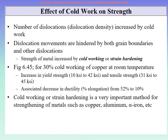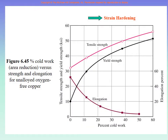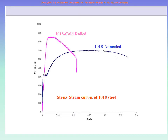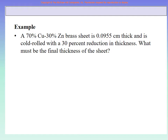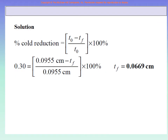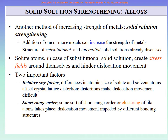If we do cold working — also called strain hardening — what happens to the strength of the material? We showed a graph of pure copper illustrating how tensile strength, yield strength, and elongation change with percent cold work. We also showed the same material, 1018 steel, before and after cold rolling, and what happens to strength and ductility. A simple example was done: if there is a 30% reduction in thickness, what is the amount of cold work and what would be the final thickness?